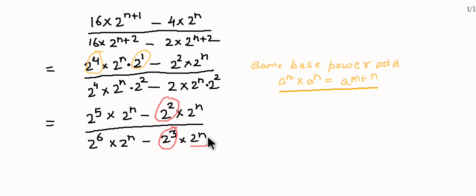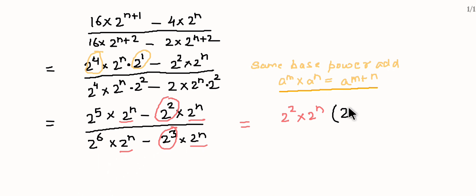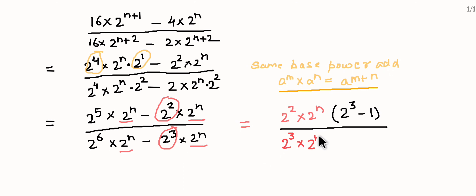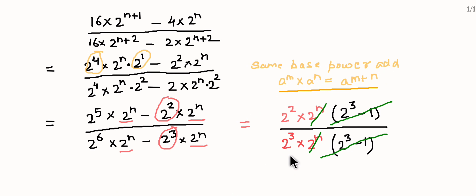2 to the power 2 और 2 to the power n को common ले लेंगे। 2 to the power 2 multiply 2 to the power n common लेने पर अंदर बच जाएगा 2 to the power 3 minus 1। नीचे से common लेंगे 2 to the power 3 multiply 2 to the power n — तो 2 to the power 3 minus 1 cancel out हो जाएगा, और बचेगा 2 to the power 2 upon 2 to the power 3.